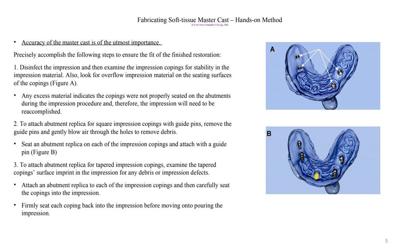Accuracy of the master cast is the most important step. Like every impression that comes from the dentist, we have to disinfect it and then examine the impression coppings for stability in the impression material. We have to look for overflow of the impression material — if there is any impression material inside or around the impression coppings, it will interfere with attaching the replicas. We can use a blade to remove a very small amount of extra material. Any excess material indicates coppings that were not properly seated on the abutments, and therefore the impression will need to be retaken.